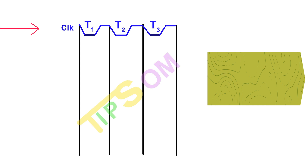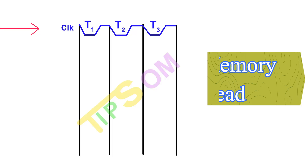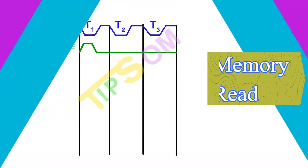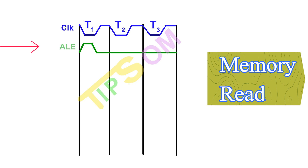The first line in the diagram is our clock or the T state. One thing to remember: memory read, input/output read, memory write, and input/output write — all four timing diagrams have three T states. So these three T states will be the same for all timing diagrams in this video. Next is ALE — as you already know from the opcode fetch timing diagram, ALE is active during the first half of the first T state and then goes low.